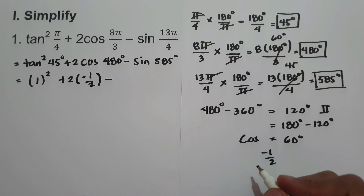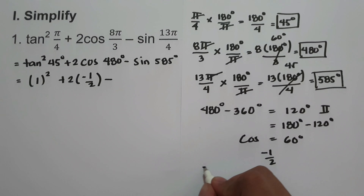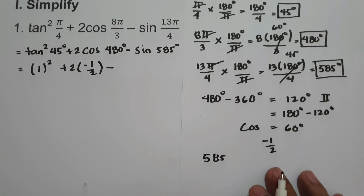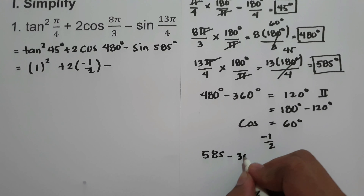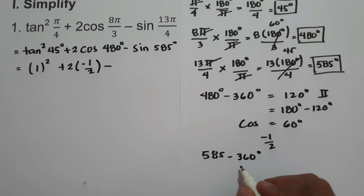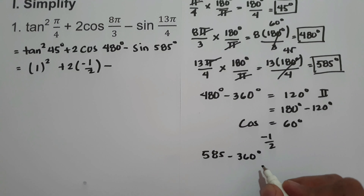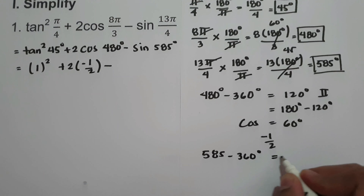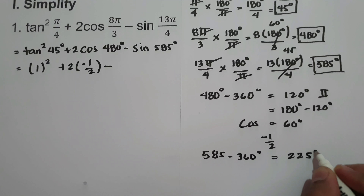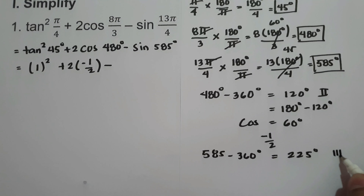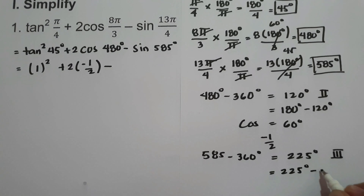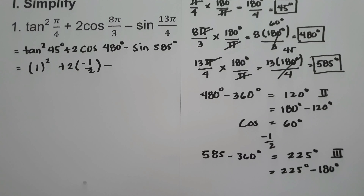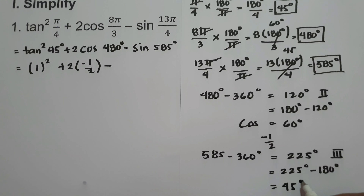For sine 585 degrees, since 585 is greater than 360, we subtract 360: 585 minus 360 is 225 degrees. 225 degrees is in quadrant 3, and the reference angle in quadrant 3 is 225 degrees minus 180 degrees, which is 45 degrees.